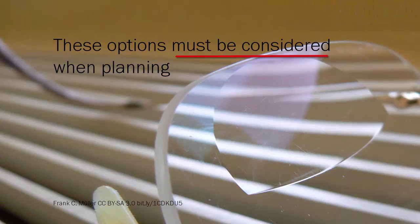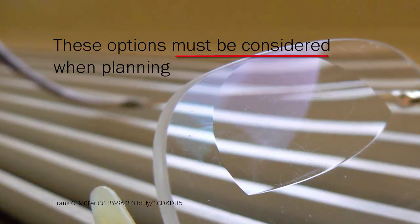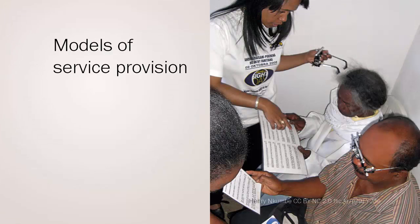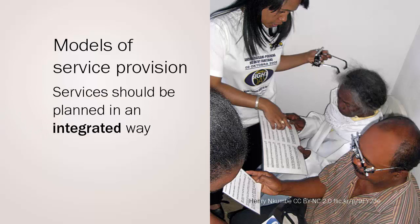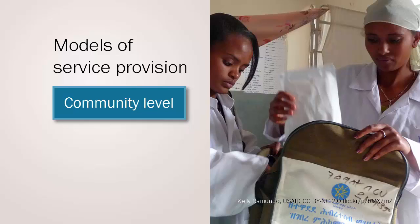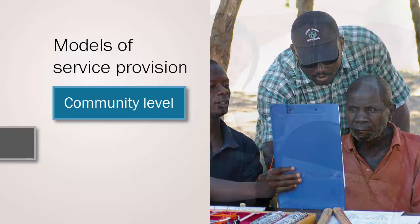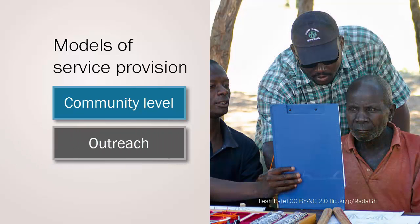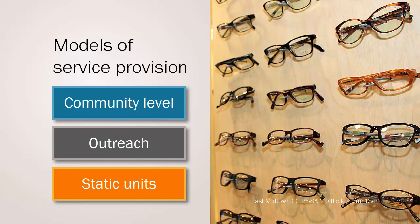These options must be considered when planning for service provision in the community. Models of service provision for presbyopia vary within health systems, but primary healthcare, static and outreach services should be planned in an integrated way to improve access in the community. At the community level, training for dispensing ready-made presbyopic spectacles should be considered through primary healthcare workers or pharmacists. Outreach screening and dispensing camps can also be used as a strategic service to reach adults over the age of 45. Finally, static units can be used to provide access to ready-mades and also patient-specific multifocals, which require more equipment and skills.